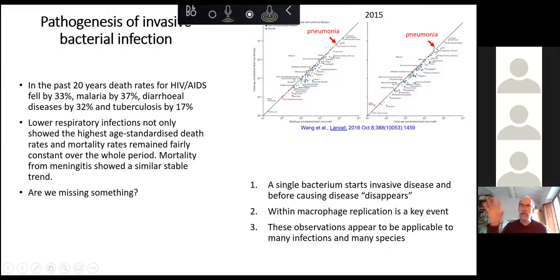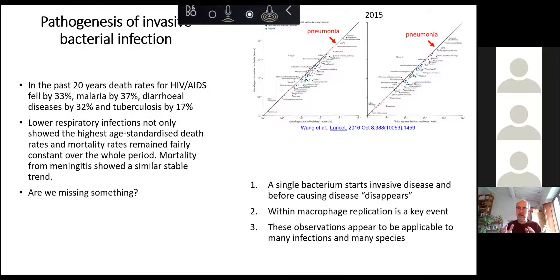So where do I come from, and what are the three steps I want to show you? The first is that a single bacterium starts invasive infection — work done before leaving Siena. Then I realized that single bacterium has an important phase during infection in tissue macrophages, in the first 6, 10, 12, 24 hours of infection. And this is likely the case not only for my model organism, but for many other situations we are starting to explore.